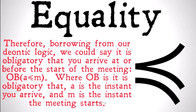Therefore, borrowing from our deontic logic, we could say it is obligatory that you arrive at or before the start of the meeting as OB(A precedes or is equal to M), where OB is 'it is obligatory that,' A is the instant you arrive, and M is the instant that the meeting starts. So the instant you arrive has to be before or at the same time as the instant that the meeting starts — it is obligatory that that is true.